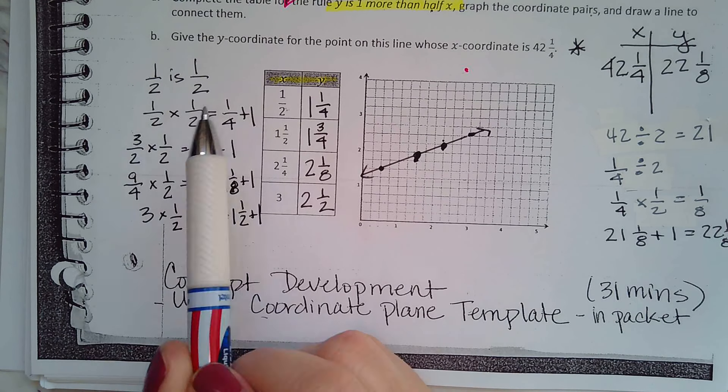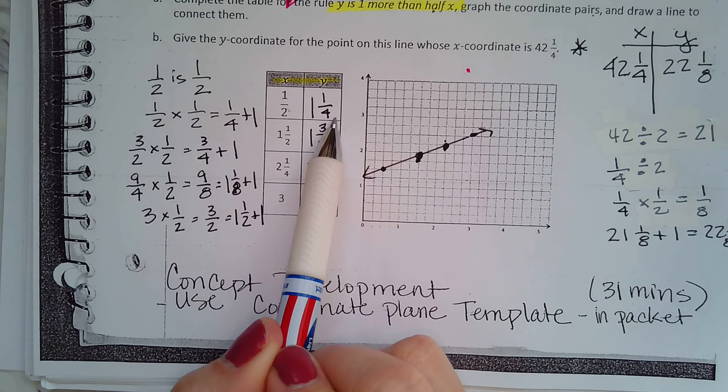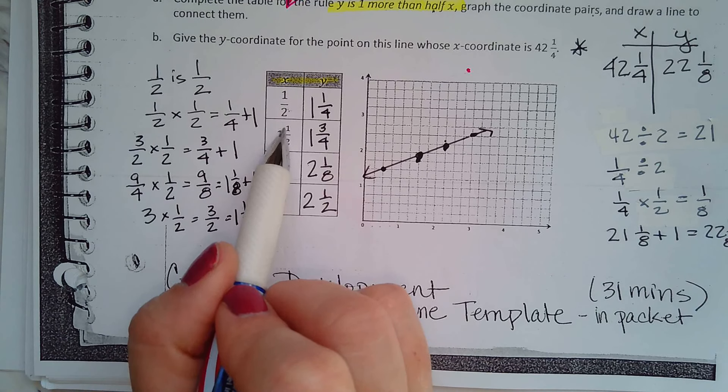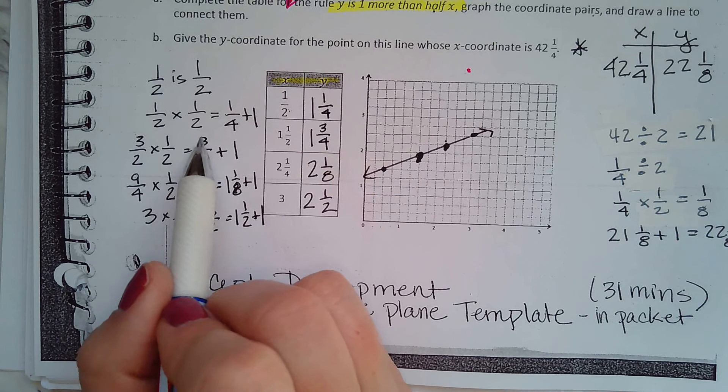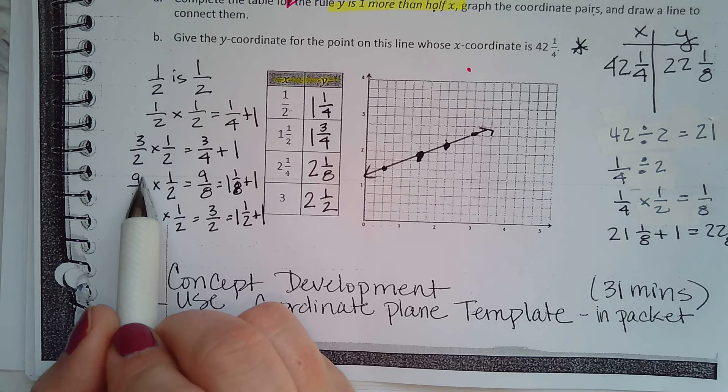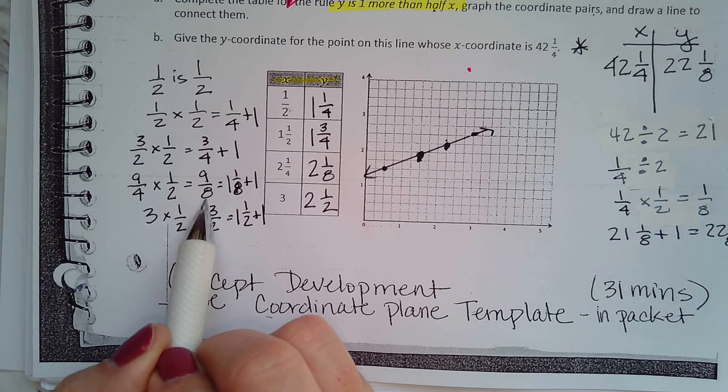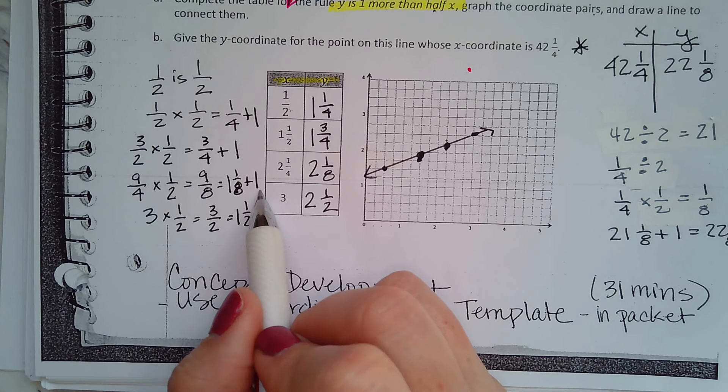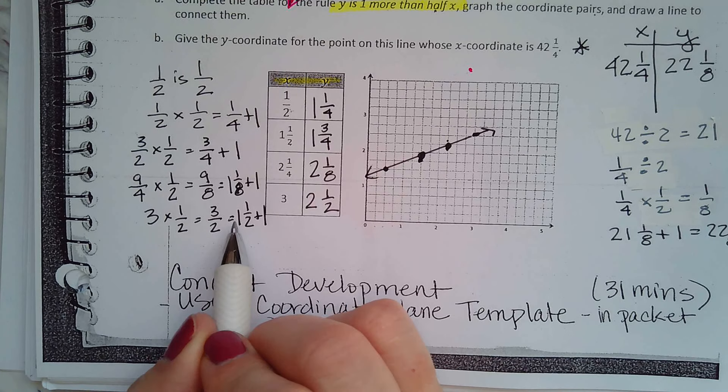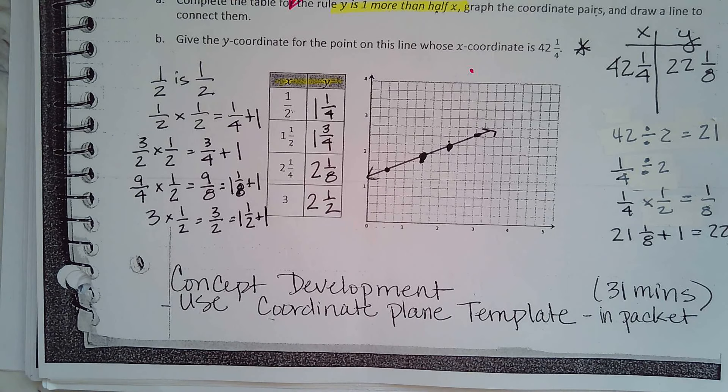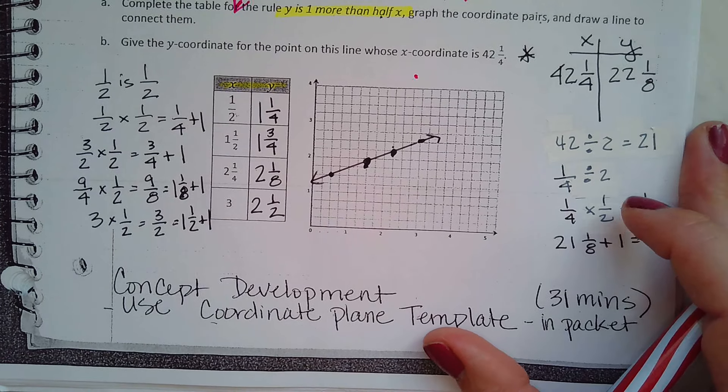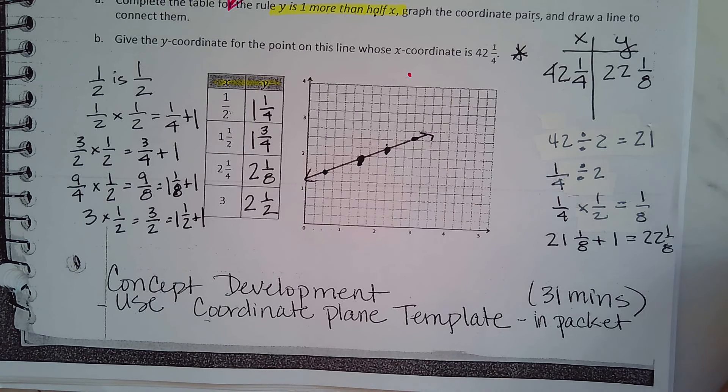So I solved this by going one half times one half is one fourth plus one is one and one fourth. You can't multiply unless you change it to an improper fraction. So three halves times one half is three fourths plus one is one and three fourths. You have to change this to an improper fraction. Nine fourths times one half is nine eighths which is really one and one eighth plus one is two and one eighth. Three times a half is three halves which is one and one half plus one is two and a half. Then plot the points and draw the line. It's going up at a very small slope.